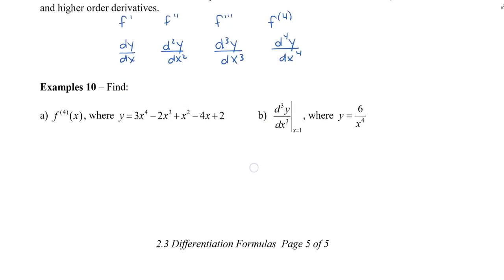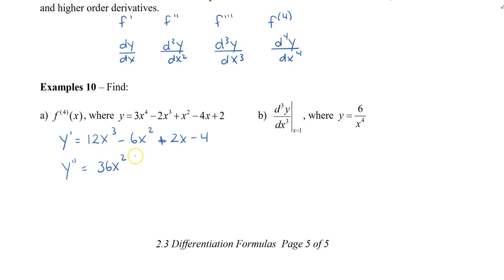Let's find the fourth derivative of f. The first derivative: 3 times 4 is 12, giving 12x cubed minus 6x squared plus 2x minus 4 — multiplying each coefficient by its exponent and decreasing each exponent by 1. Second derivative: 12 times 3 is 36x squared minus 12x plus 2. Third derivative: 72x minus 12. Fourth derivative: 72. Note that the derivative of a constant is 0, so any fifth or higher derivative would be 0.